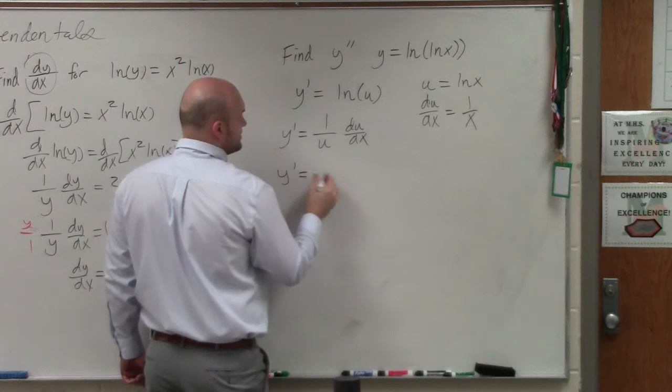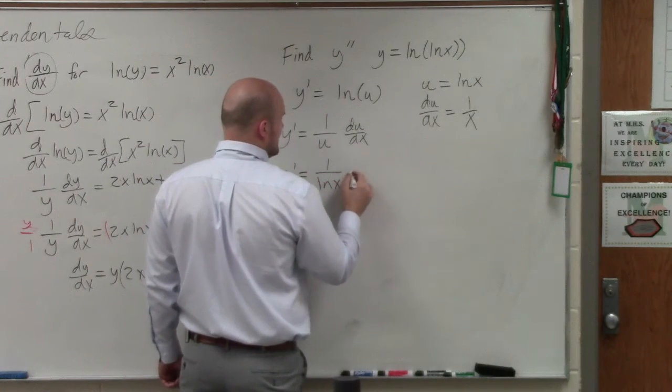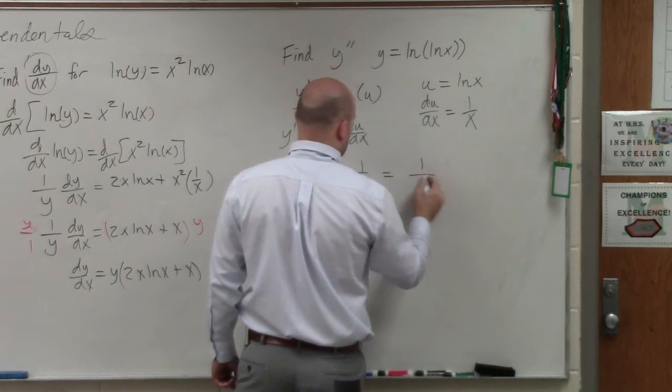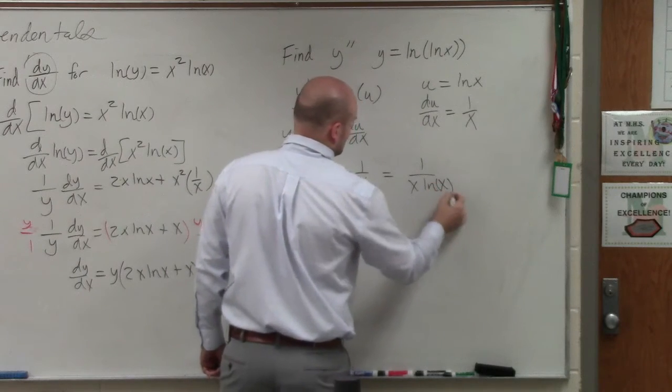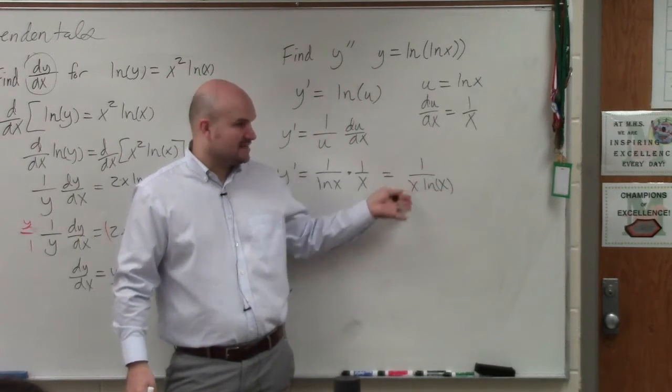So therefore, y prime is equal to 1 over ln of x times 1 over x, which is equal to 1 over x ln of x. So we have the natural logarithm of x times x.